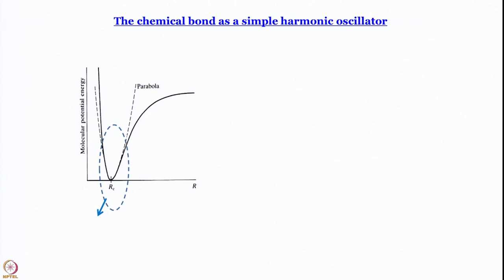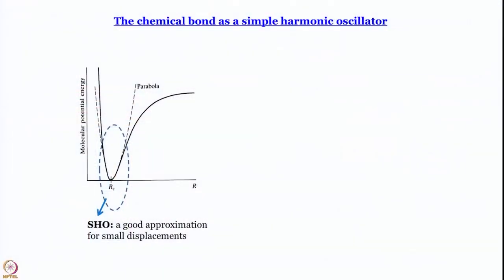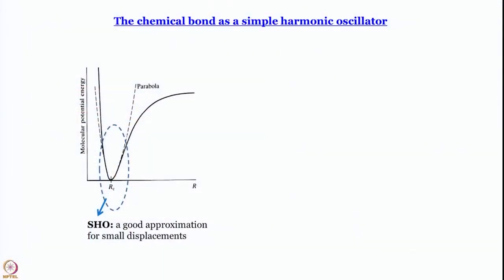That is the premise within which we are going to work for now. Later, when doing spectroscopy, you have to consider anharmonicity of the oscillator — but that is a story for another day. Those interested can find lectures on our molecular spectroscopy course, freely available on YouTube. So, simple harmonic oscillator is a good approximation for small displacements.